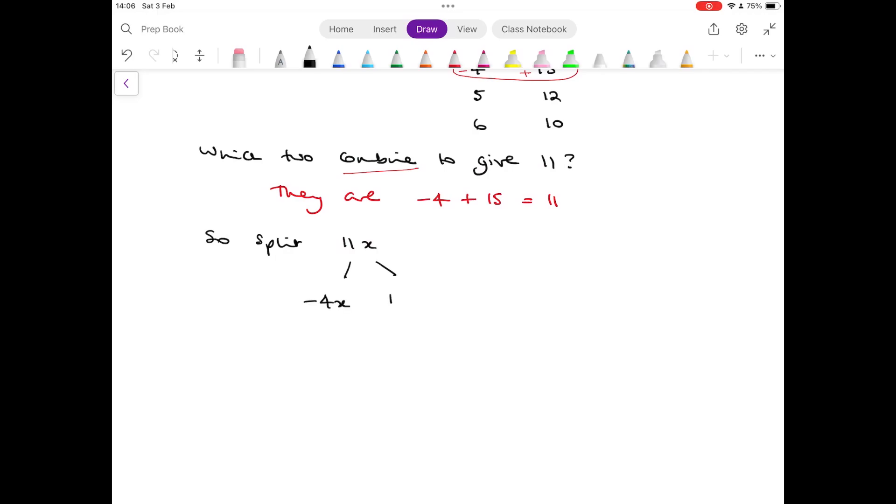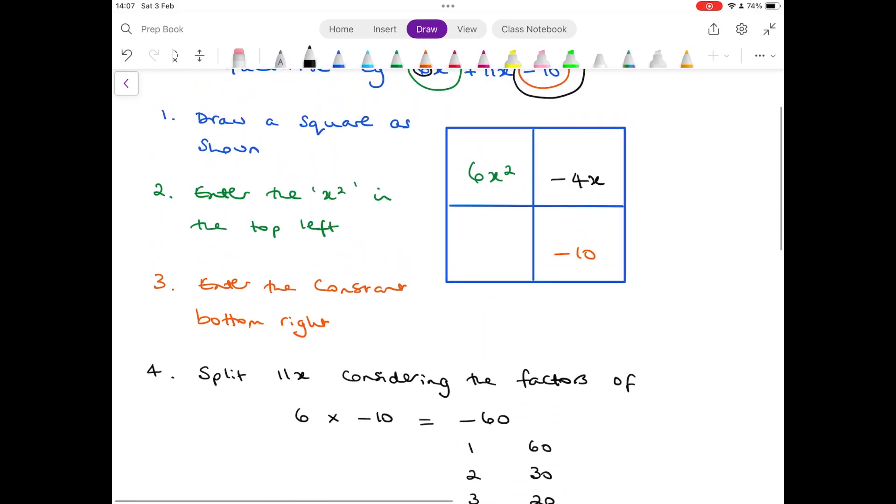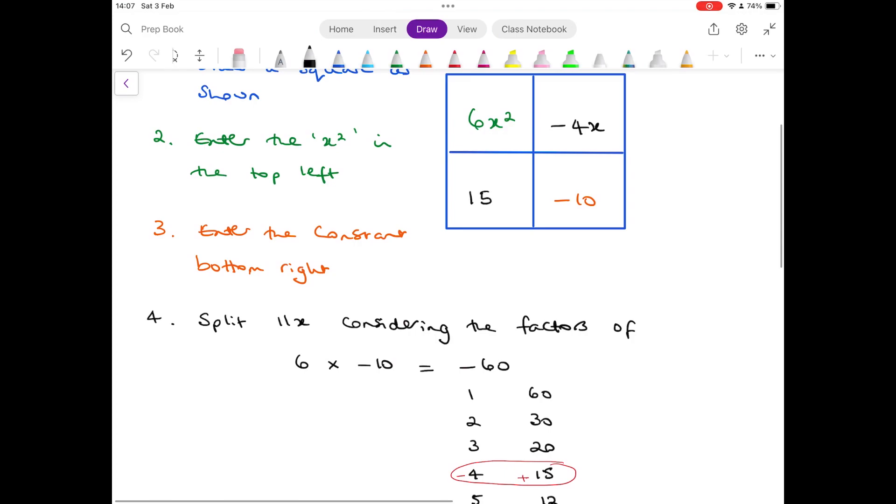So splitting the 11x into minus 4x and 15x and putting those two terms in the final two squares as shown.